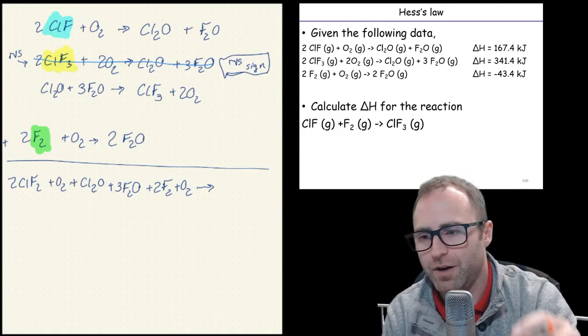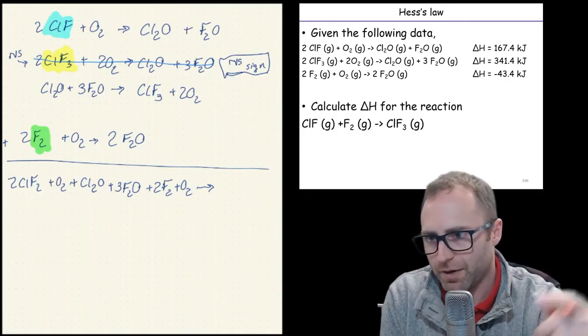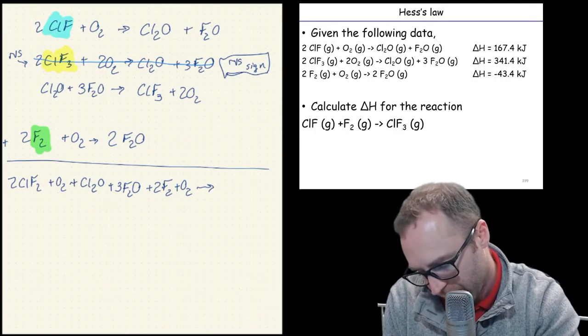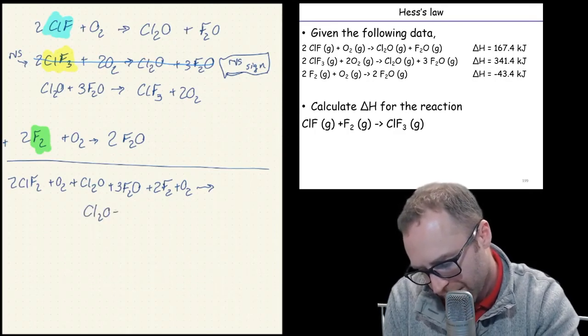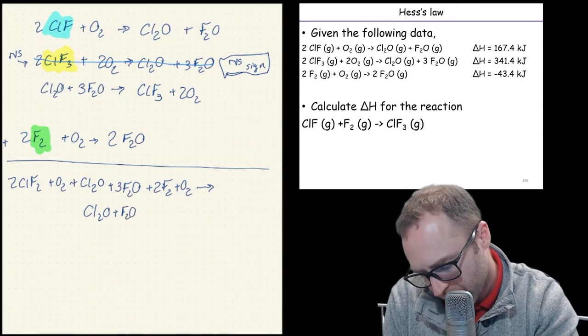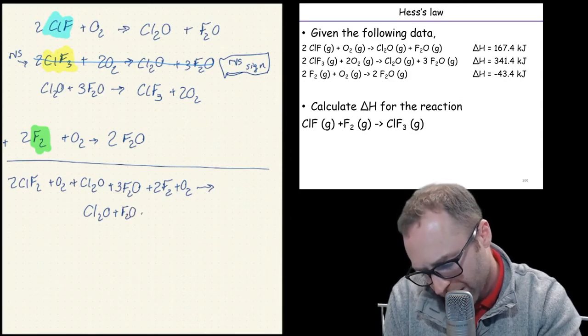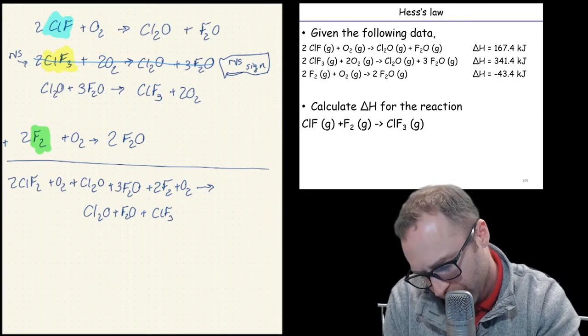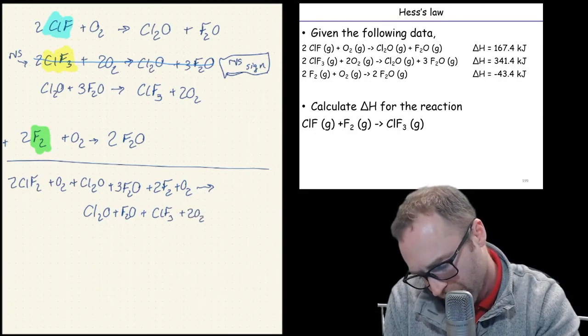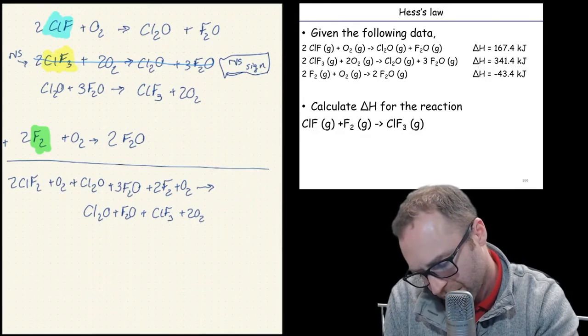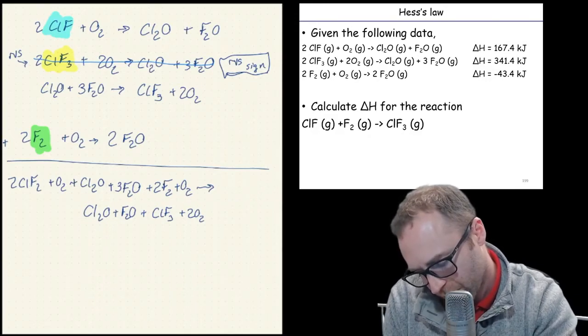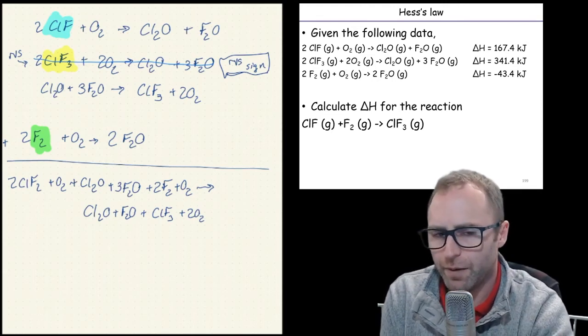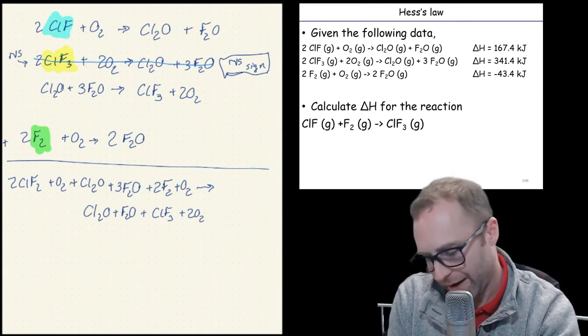And because this is really long and my writing is kind of big, I'm going to just shift the products down a line, but I'm going to still put the arrow there to say it's going to go to form and I'm going to put now all of my products. So we go Cl2O plus F2O plus ClF3 plus 2 O2 plus 2 F2O and we need to make sure that we've got all of our stuff actually accounted for and written out.